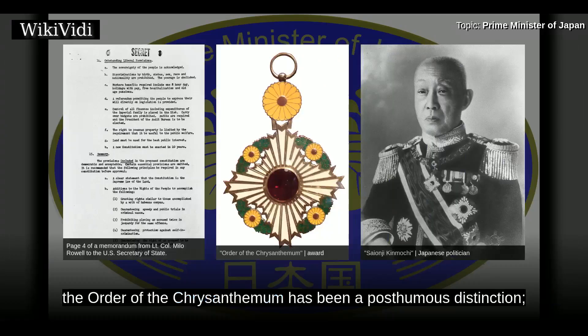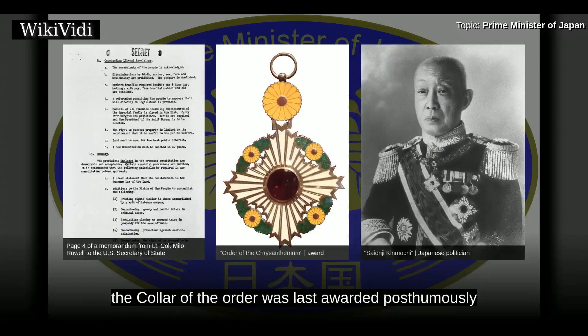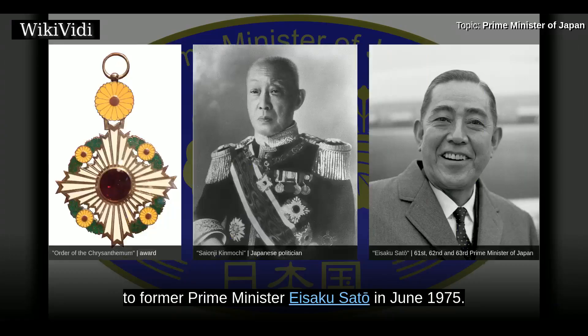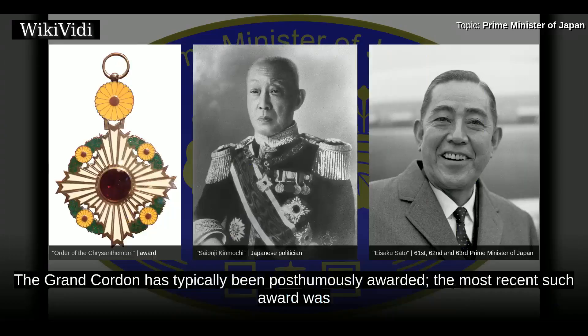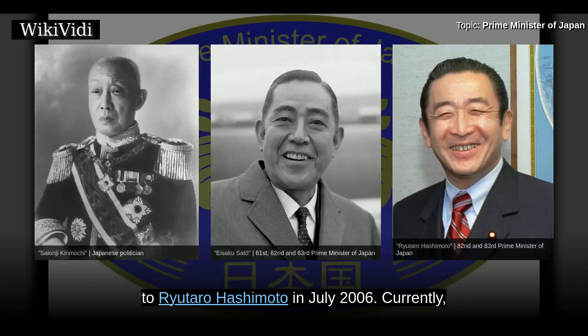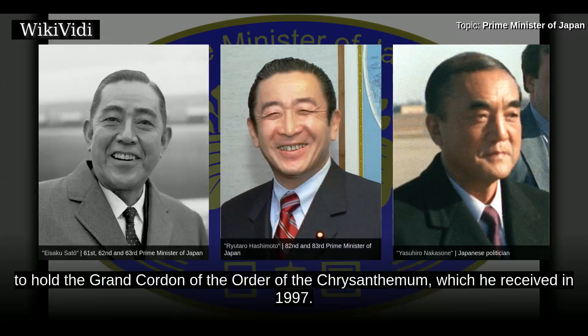The collar of the order was last awarded posthumously to former prime minister Eisaku Sato in June 1975. The Grand Cordon has typically been posthumously awarded; the most recent such award was to Ryutaro Hashimoto in July 2006. Currently, Yasuhiro Nakasone is the only living former prime minister to hold the Grand Cordon of the Order of the Chrysanthemum, which he received in 1997.